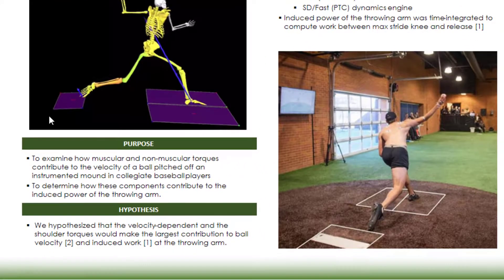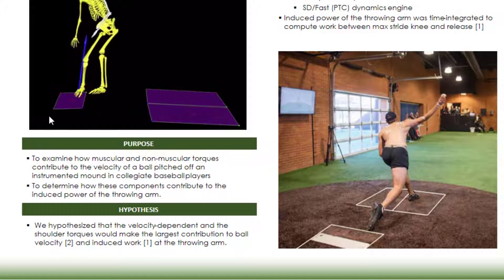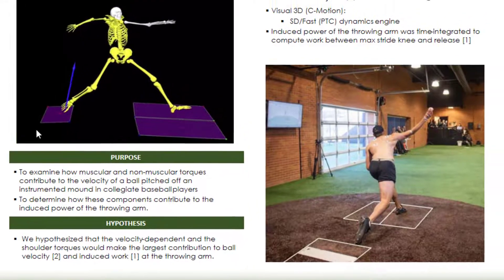So the purpose of this study was to examine how muscular and non-muscular torque contribute to the velocity of the ball pitched off an instrumented mound, as well as to the induced power of the throwing arm.